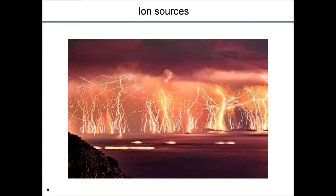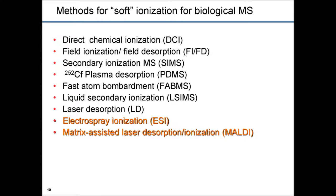Let's start from ion sources. These are ion sources which we observe in nature — just lightnings recorded with time-lapse photography. And these are ion sources which we use for biological mass spectrometry. There is a very long history of pursuit towards softer and softer techniques which could convert a biological molecule into charged species without breaking them into a million pieces. It started with direct chemical ionization about 50 years ago, followed by field ionization based on electric fields, then secondary ion mass spectrometry, desorption by products of californium-252 decay, fast atom bombardment, and so on. Now the methods of choice for soft ionization are electrospray and matrix-assisted laser desorption ionization, and all others could be considered niche ionization methods — widely used, but not for proteomics.